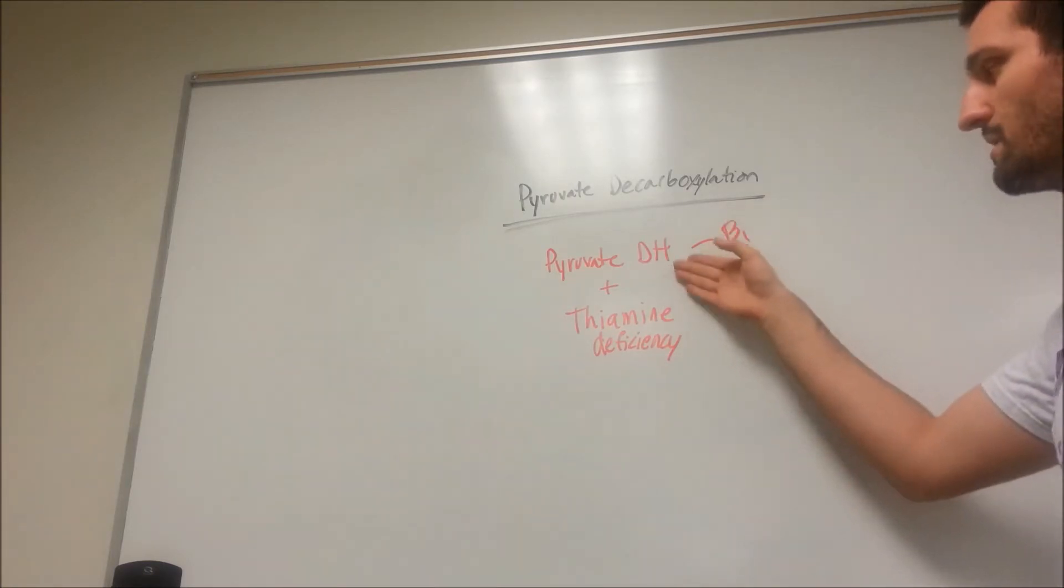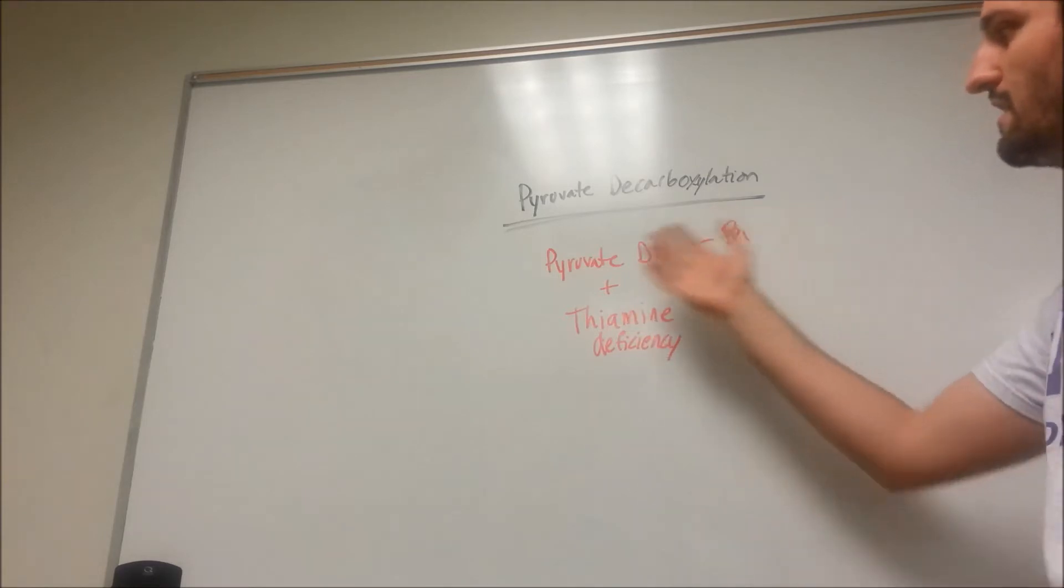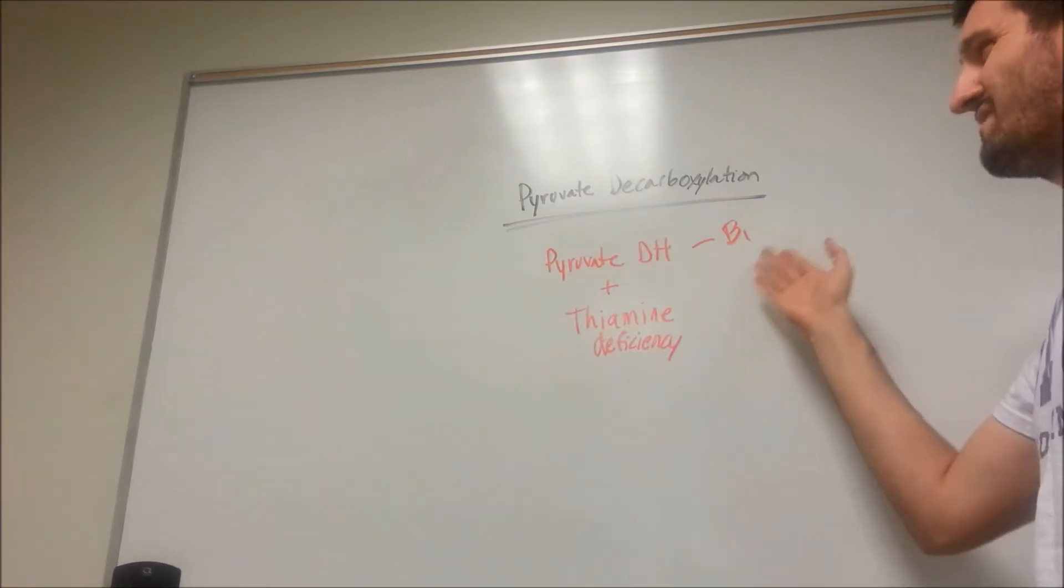Since we don't have this enzyme working properly, we're going to create a lot of pyruvate that can't get converted over. All that pyruvate is going to convert to ATP via anaerobic glycolysis.